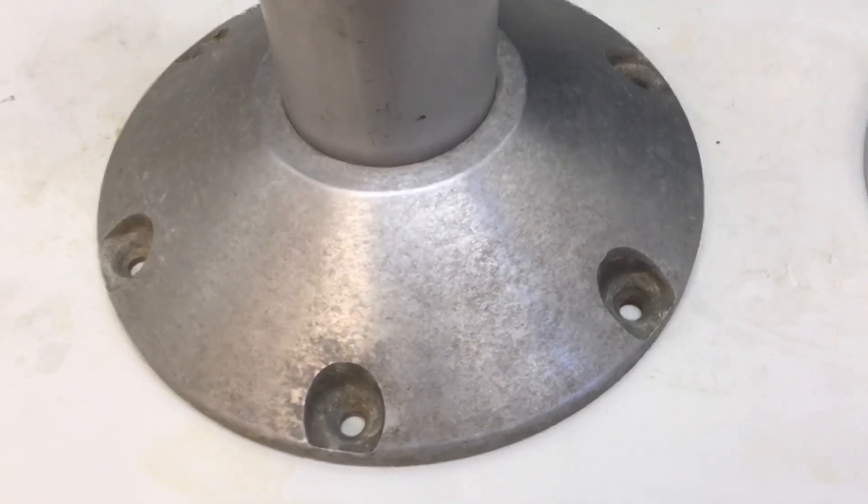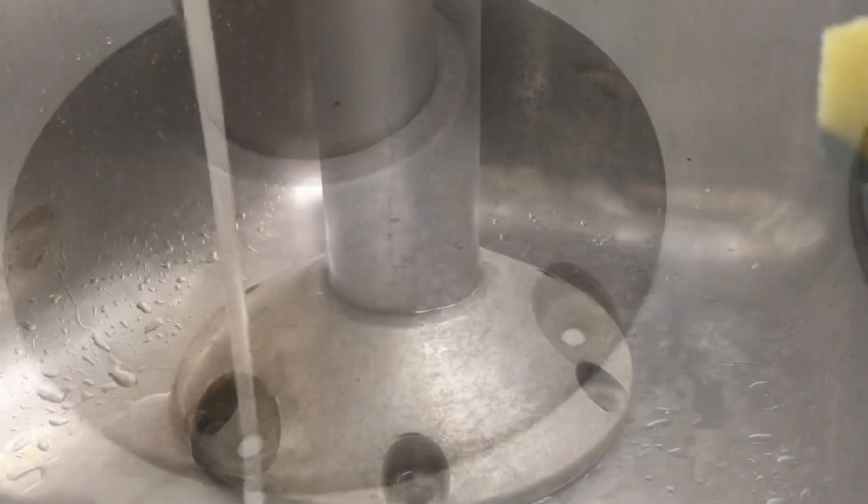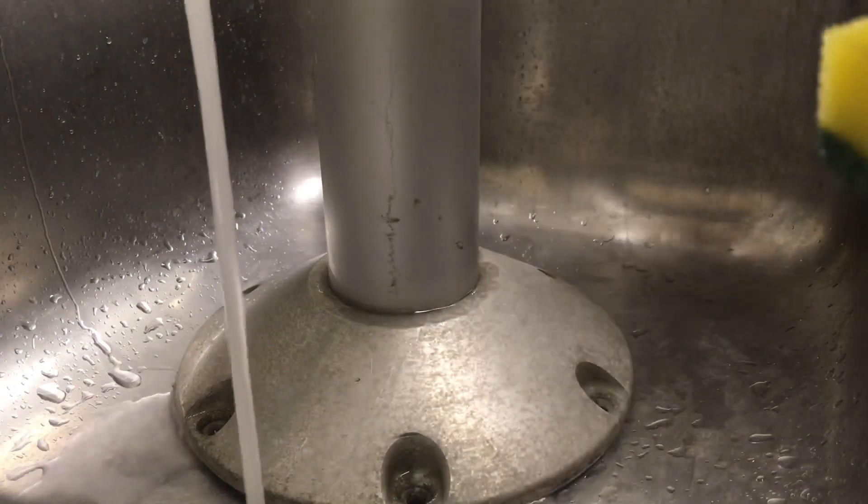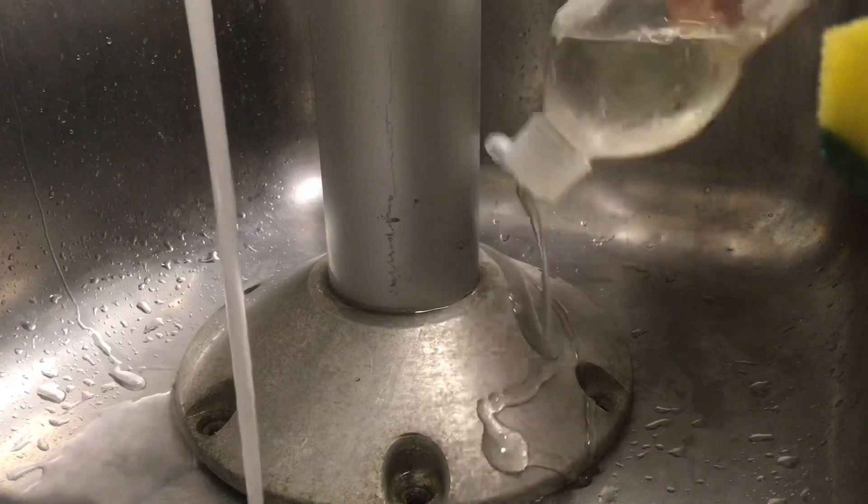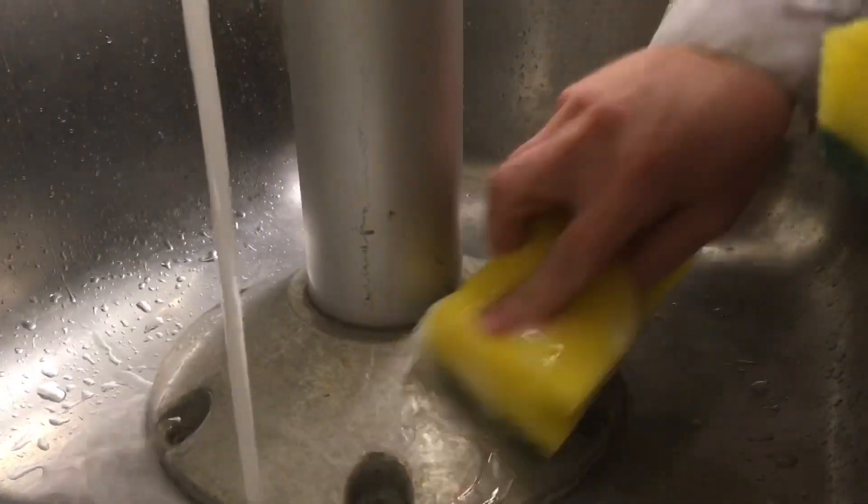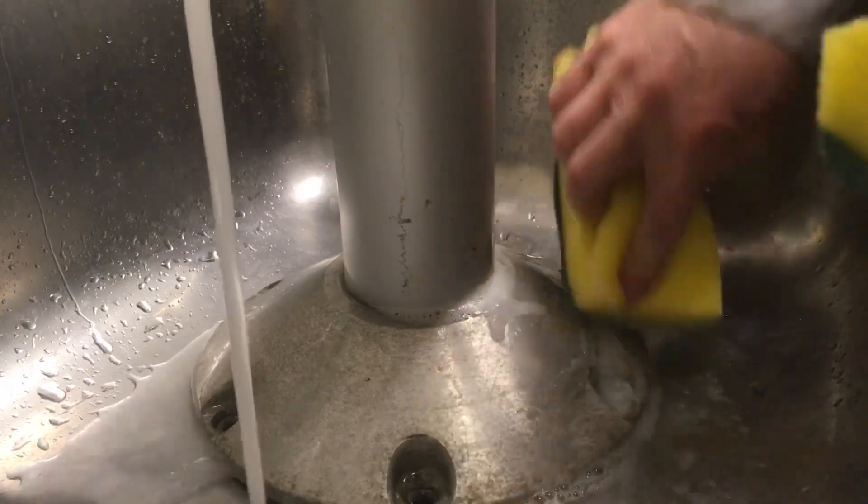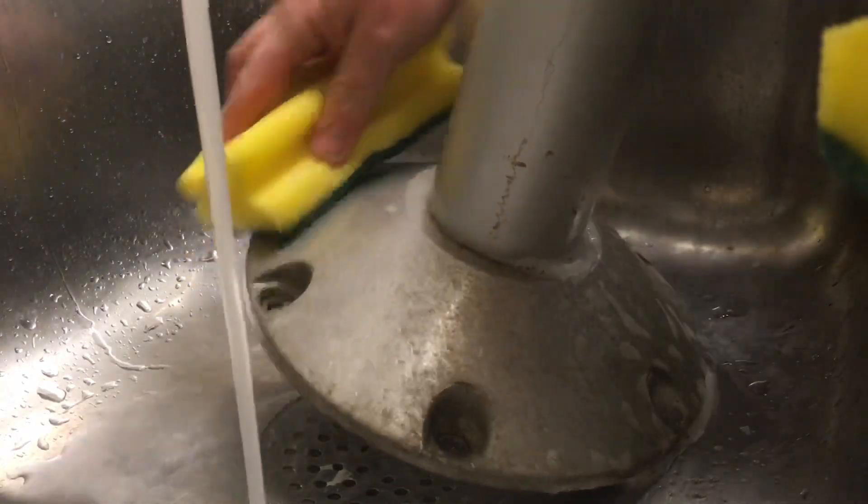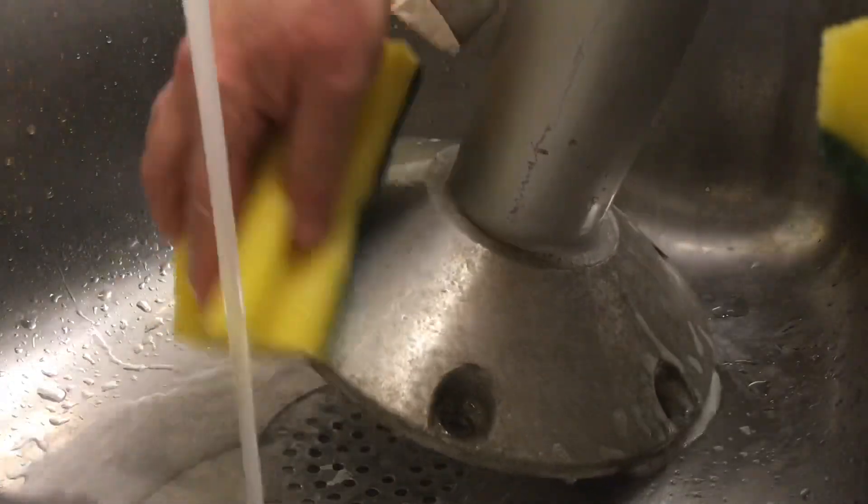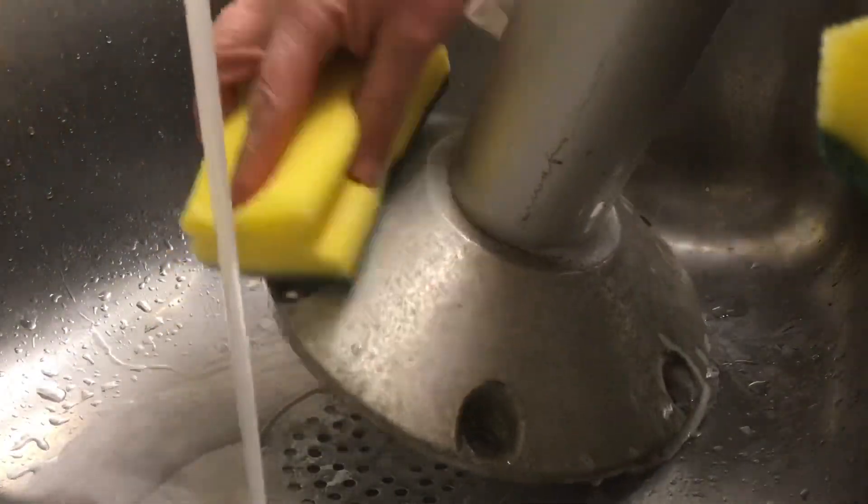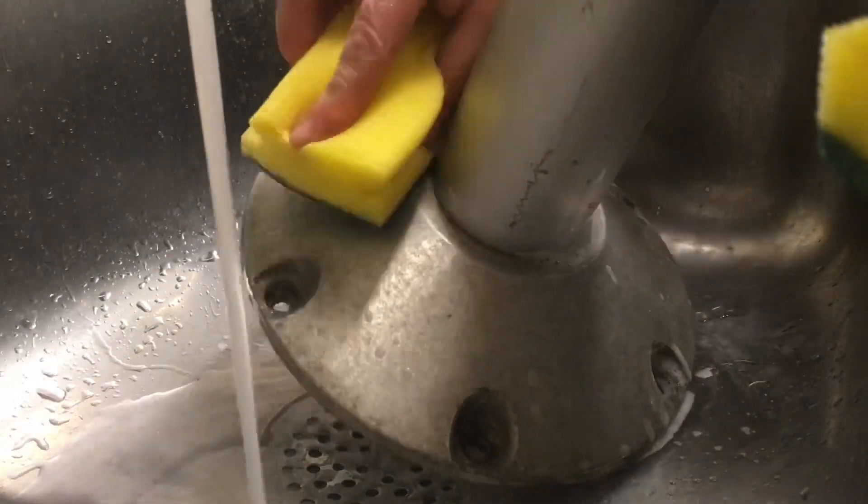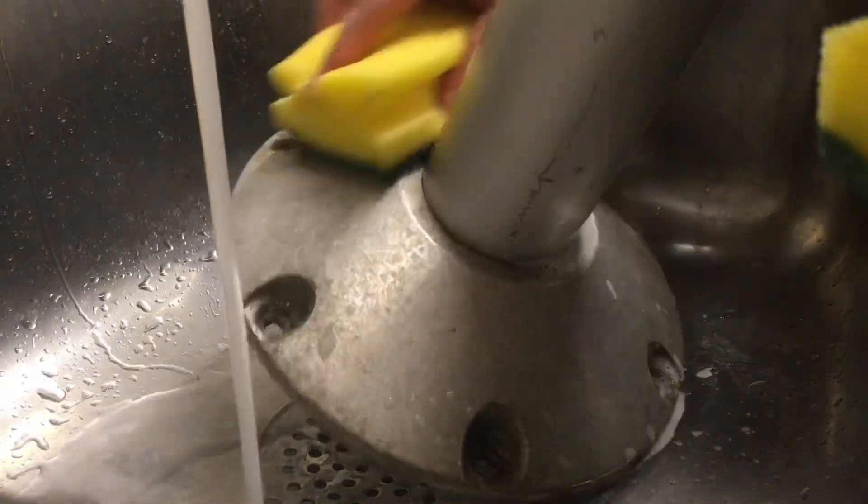Before we start the experiment, we need to clean our part to get rid of any possible grease that will block the reactions. To clean off the grease, there's nothing fancy about it, just regular detergent and some warm water will be perfectly fine. I just rub it off. You want to get rid of all the grease or organic components.